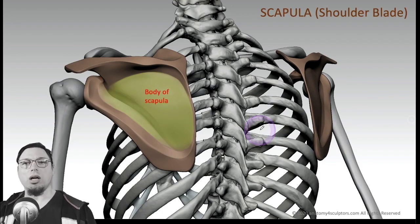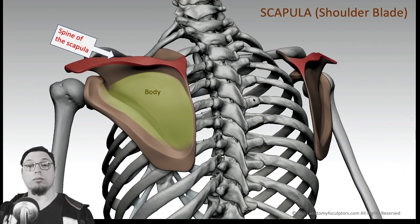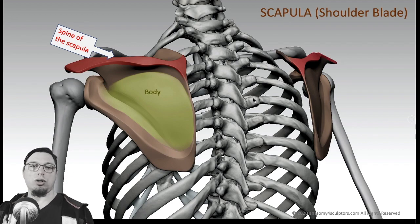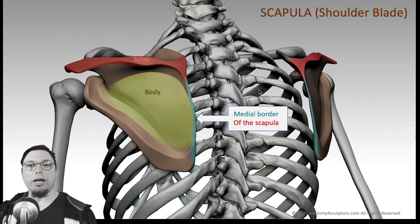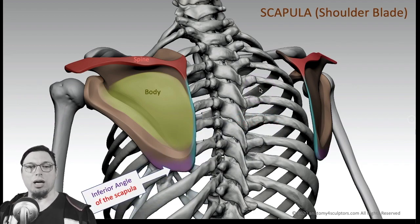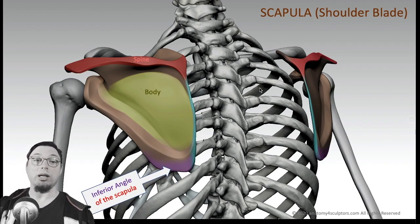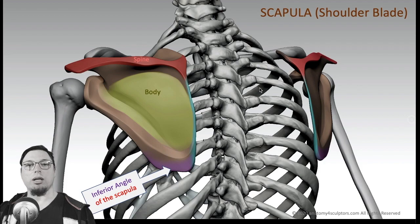The first part of the scapula, which is invisible because it's always covered with muscles, is the body of the scapula. The next important part is the spine of the scapula, which is the most important bony landmark visible on the surface — I will show you pictures and explain how to spot it. Next is the medial border of the scapula and the inferior angle of the scapula, which is hidden in the muscles and visible only if the person is quite lean or the scapula is retracted.